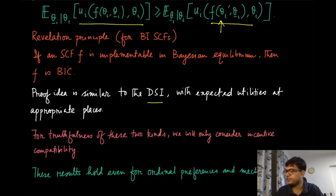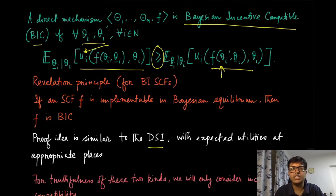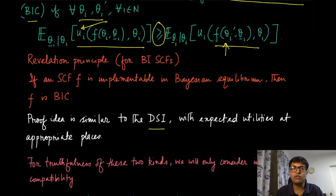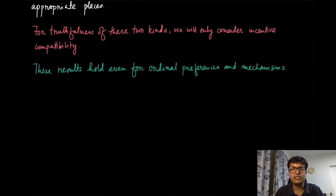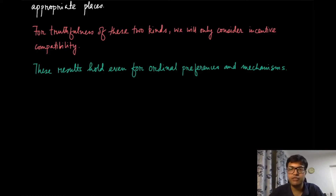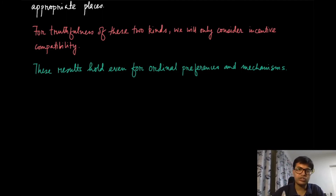Even though we have defined all these results in terms of cardinal preferences, you can also think of a similar setup with ordinal preferences. You can define dominant strategy implementation, dominant strategy incentive compatibility, and Bayesian versions similarly, and the corresponding revelation principle will also hold for ordinal preferences. That is left as an exercise.